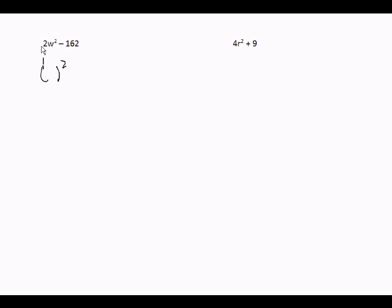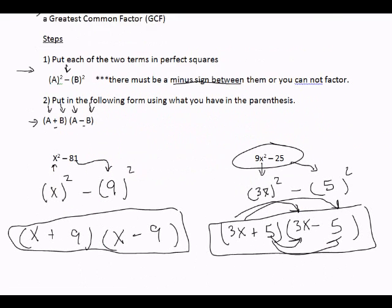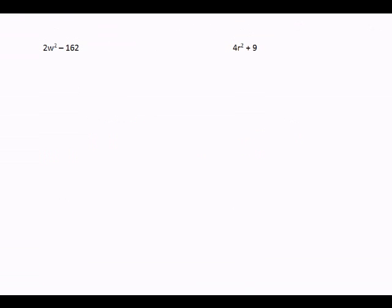For the next problem, notice I cannot put this directly into something squared because there's a 2 here — that's not a perfect square. However, remember what I said at the top: before using any factoring method, check to see if you can factor out a greatest common factor. There is a greatest common factor here. What number can I divide into both of these? I can divide each by 2. Put that 2 outside of parentheses and divide both terms by 2: 2 divided by 2 is 1w squared, and 162 divided by 2 is 81, giving us minus 81. Now I have a perfect square inside.